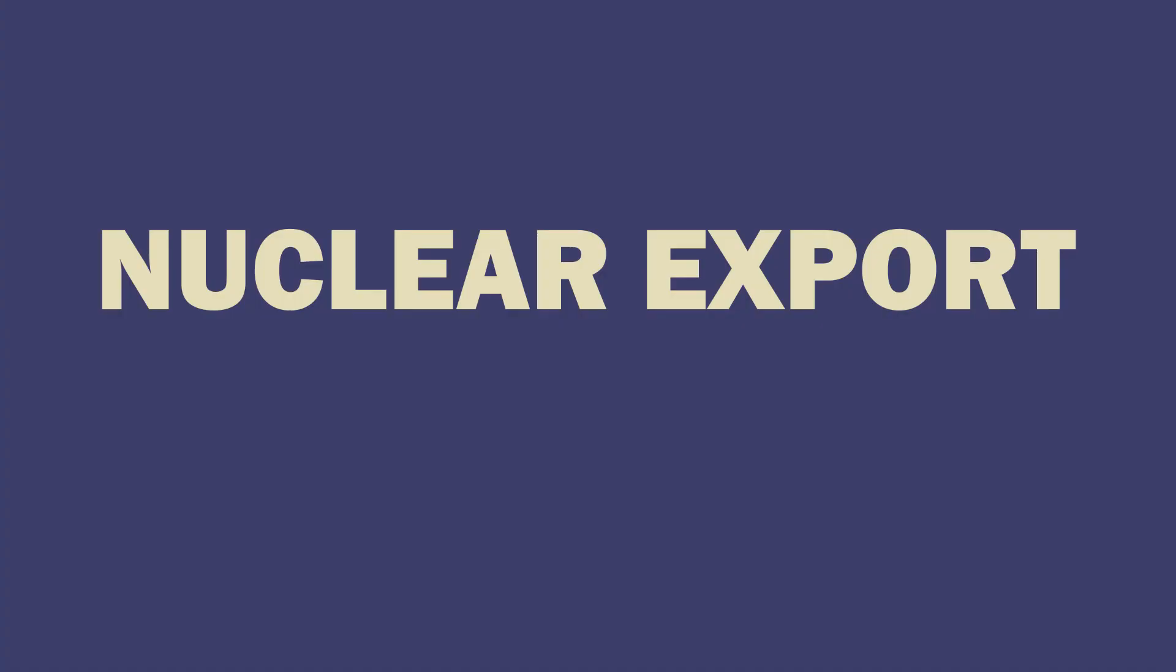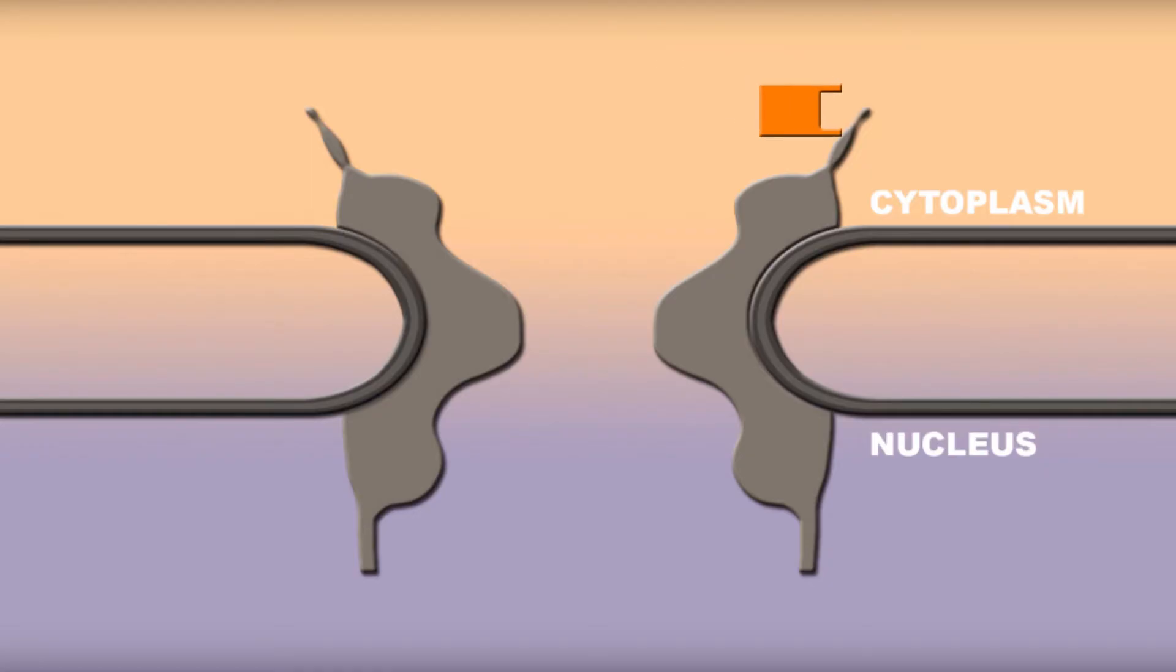Nuclear export is very similar to import, so I'm going to cover it quickly. A nuclear export receptor binds to nucleoporins and is transported into the nuclear lumen. There, it binds with RAN-GTP, which then promotes binding with its nuclear export signal bearing cargo. The receptor again binds to nucleoporins and the whole thing is transported to the cytosol.